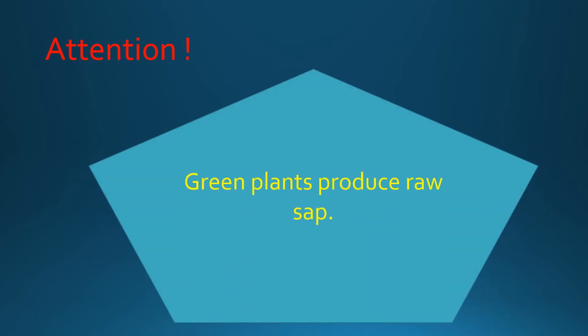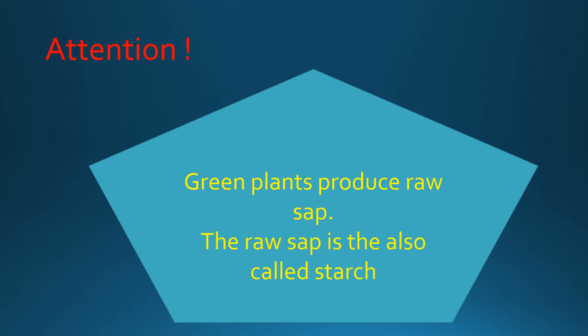Now I want you to pay attention to this. Green plants produce elaborated sap, and this elaborated sap is also called starch. What do we call the elaborated sap? Excellent — starch. Repeat after me: elaborated sap, we call it starch.